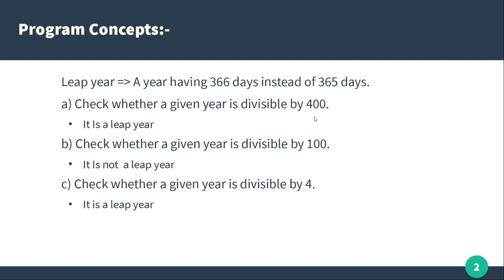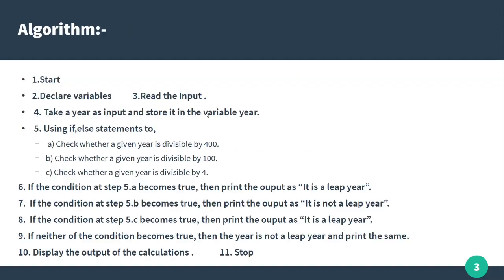Suppose we go to the leap year check — next, check whether it is divisible by 400. If 100 divides with remainder 0, confirm that is a leap year. Next, if 4 divides with remainder 0, we go to leap year. If this condition fails, it is not a leap year. So this is the concept, and this algorithm is going to start.